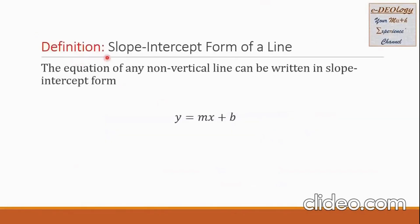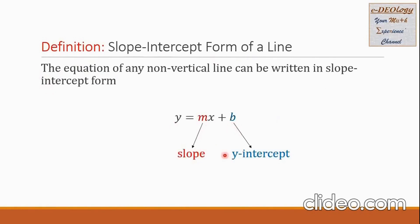Let us define slope-intercept form of a line. The equation of any non-vertical line can be written in slope-intercept form. This is the form: y equals mx plus b. The m here is the slope, and we can see that m is the coefficient of x. The b here is the y-intercept, and we know that the y-intercept has ordered pair (0, b).